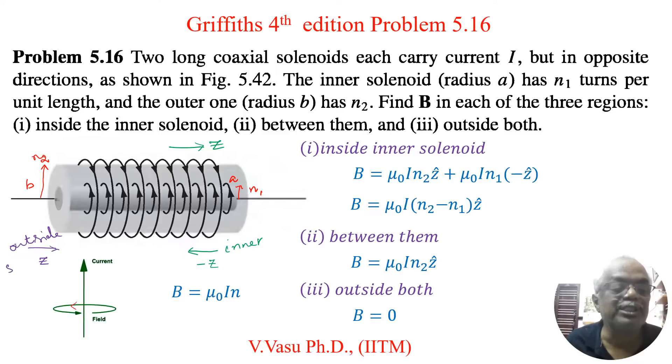So outside solenoid it is positive Z axis. So now you can solve these three things. That is first one is inside inner solenoid.